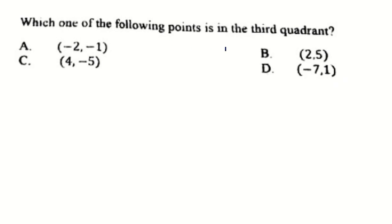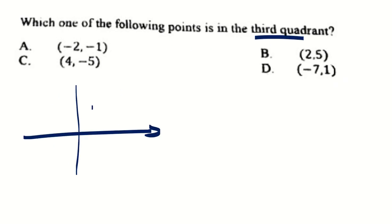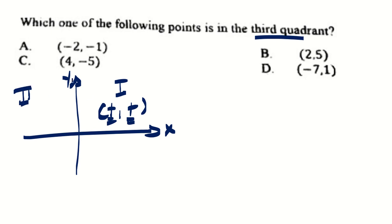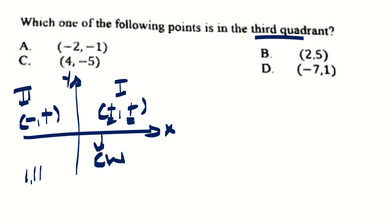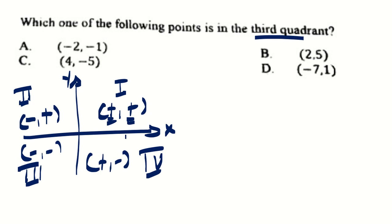This one is easier. Which one of the following points is in the third quadrant? Remember, there are four quadrants in the x-y coordinate plane. First quadrant: both x and y are positive. Second quadrant: x negative, y positive. Third quadrant: both x and y are negative — both minus. Fourth quadrant: x positive, y negative. We are asked for the third quadrant, so we need both coordinates negative. That is found in A.